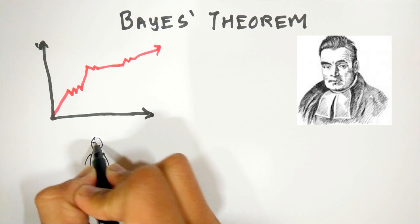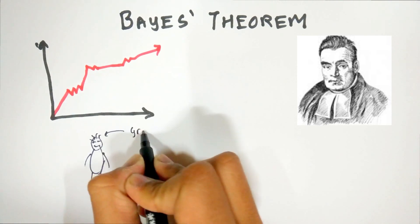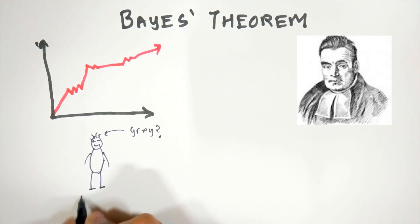For example, if having grey hair is associated with age, then information about a person's age can help us more accurately determine the probability of the person having grey hair.